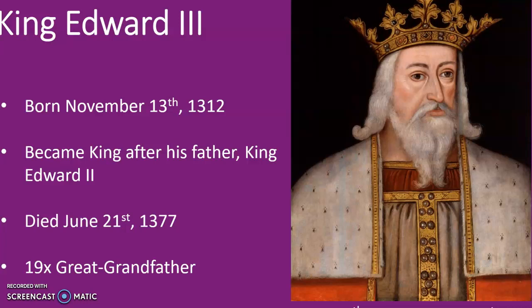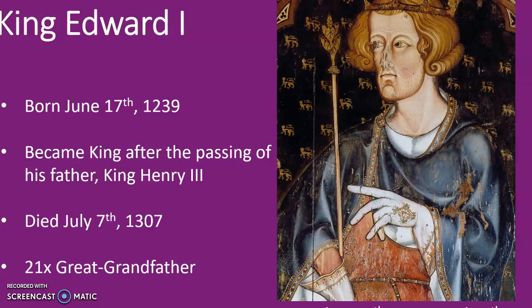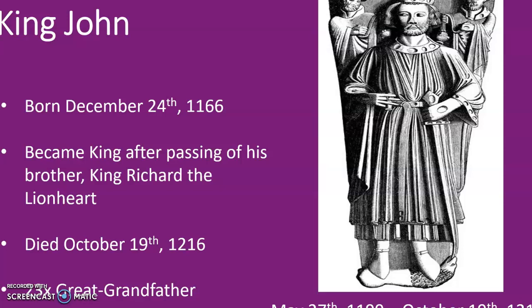Edward III was brought to the throne January 25th, 1327, while his father, King Edward II, would not pass until September 21st, 1327. Moving back, King Edward I was born June 17th, 1239, and became king after the passing of his father, King Henry III. And King Henry III became king after the passing of his father, King John. King John became king not after the passing of his father, but after the passing of his brother, King Richard the Lionheart — the famous Crusader king. King John was the son of King Henry II, born March 5th, 1133.